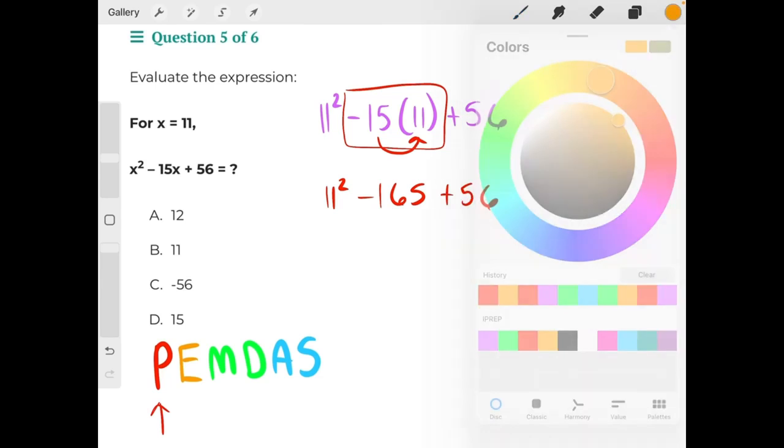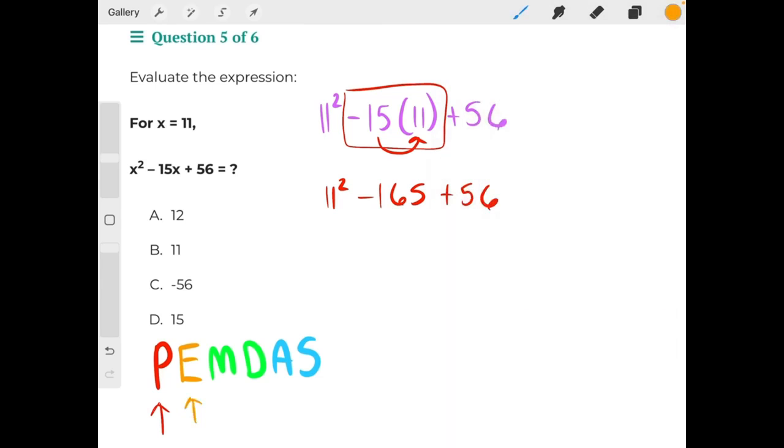Then our next step in the equation would be exponents. Our exponent is 11 squared. 11 times 11 is 121, minus 165, plus 56.